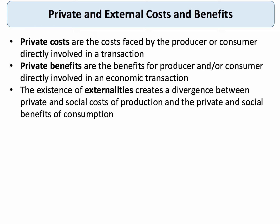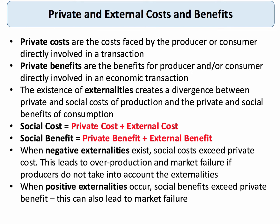In a world of no externalities, all we would focus on would be private costs and private benefits. But the existence of externalities creates a divergence between private and social cost and private and social benefit. Social cost equals the private cost plus external cost. So in the case of negative externalities, the social cost is greater than the private cost, and this can lead to overproduction and market failure.